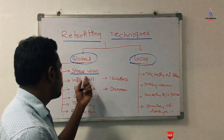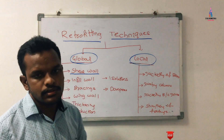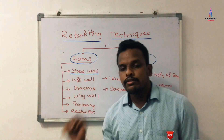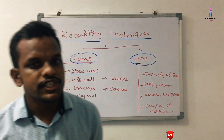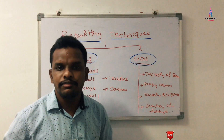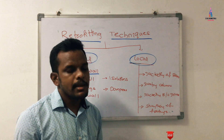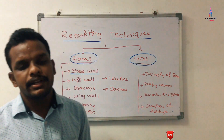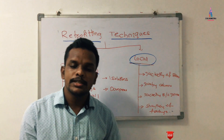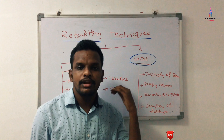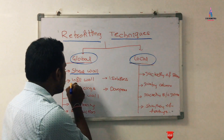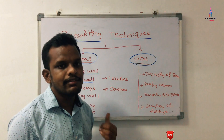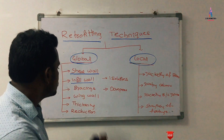The second global technique is the infill wall. The infill wall is similar to the shear wall, but the wall is provided in between members in horizontal and vertical positions — that is, between beams and columns. If you provide a wall section in between the beam and column members, we call it an infill wall. It is also an important technique to help decrease deflection values.